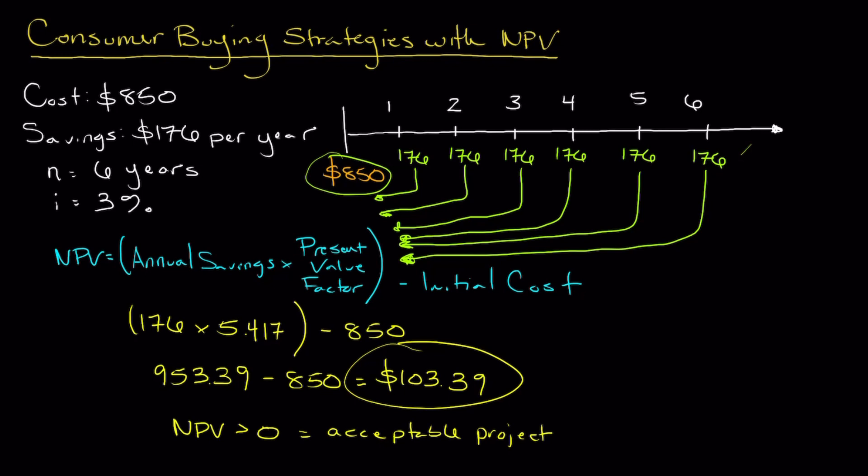But typically, if an NPV is greater than zero, it's an acceptable project. Likewise, if it's less than zero, it's usually not a very desirable project. And to the extent to which it exceeds zero, it obviously gets much more beneficial for the recipient, of course.